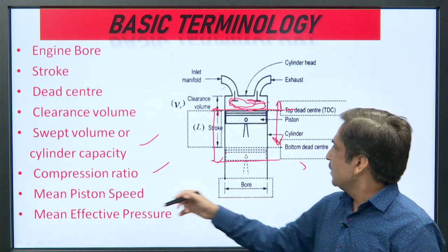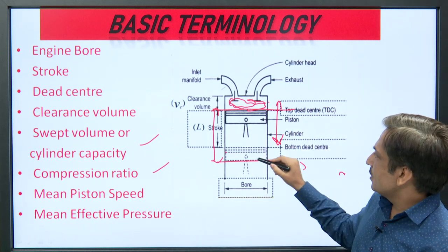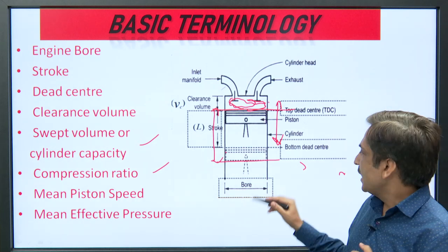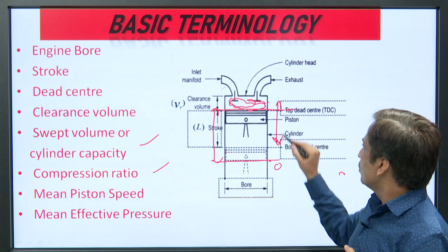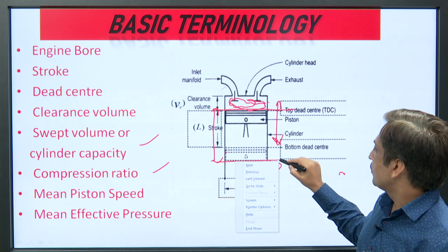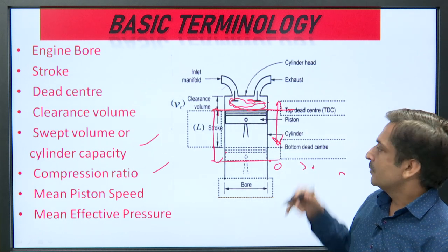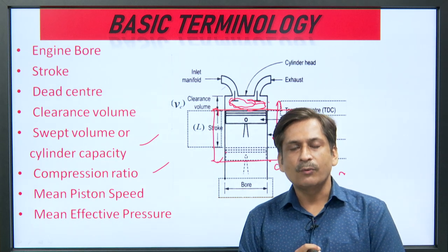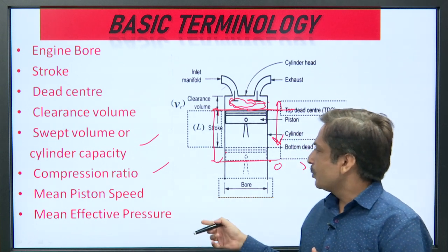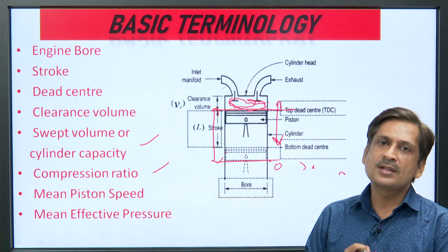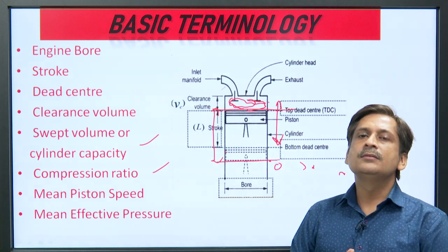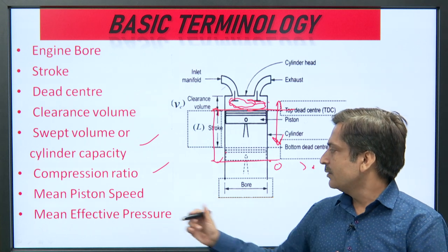Mean piston speed is the speed of the piston moving from one dead centre to another dead centre. It is average speed, because at the extreme positions the speeds are zero and between the two dead centres the speed varies, so we always take the average speed. Mean effective pressure is the average pressure throughout the cycle, because from one point to another the pressure keeps changing. In coming lectures we will discuss mean effective pressure in detail.